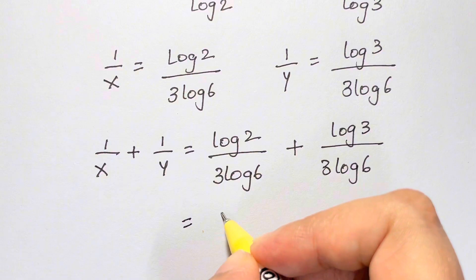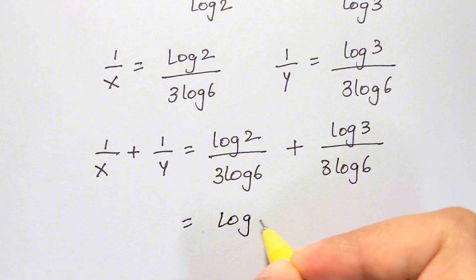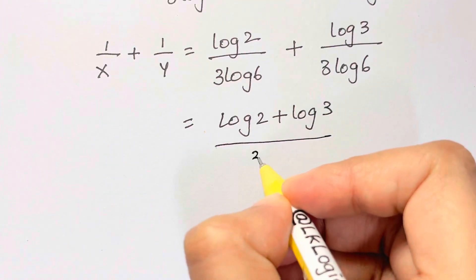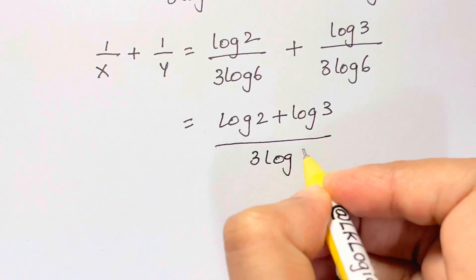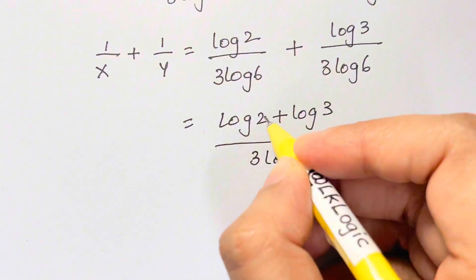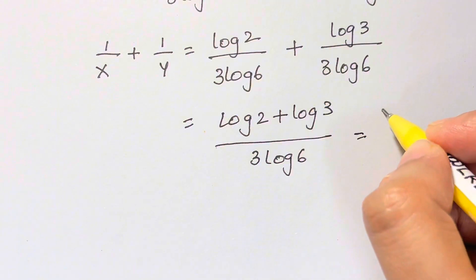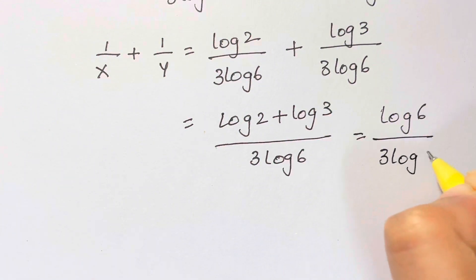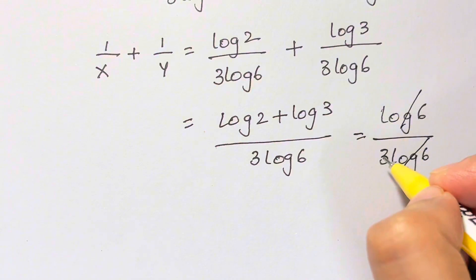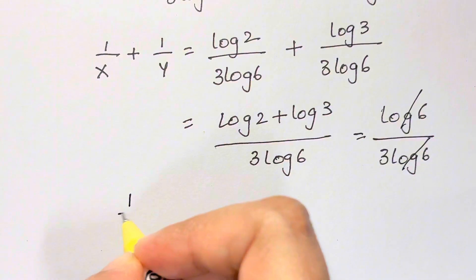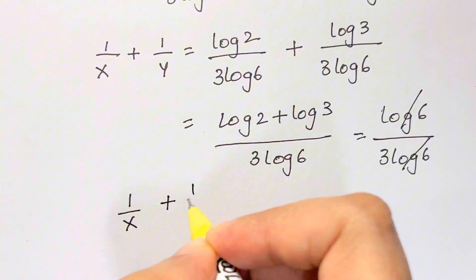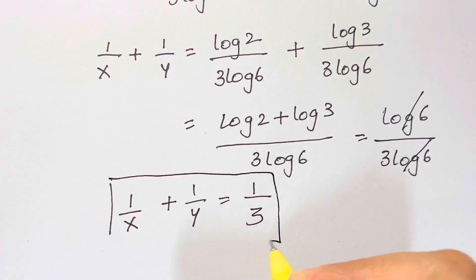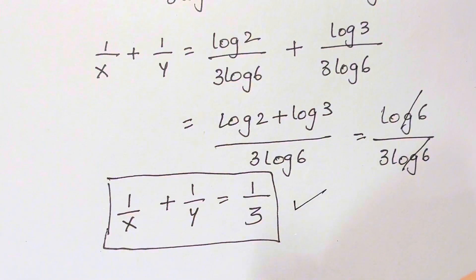Since we have the same denominators, we add the numerators: log 2 plus log 3 over 3 log 6. Log 2 plus log 3 equals log 6, so we have log 6 over 3 log 6. The log 6 cancels, leaving 1 third. So 1 over x plus 1 over y equals 1 third. That's the answer using the first method with logarithms.